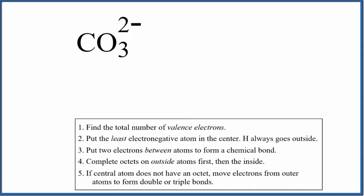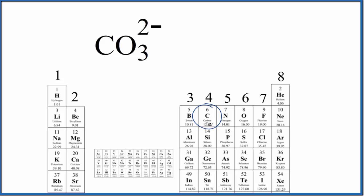We can go to the periodic table here. Carbon right here is in group 14, sometimes called 4a. That has 4 valence electrons. And then oxygen is in group 16, sometimes called 6a. That has 6 valence electrons. We have 3 oxygen atoms.